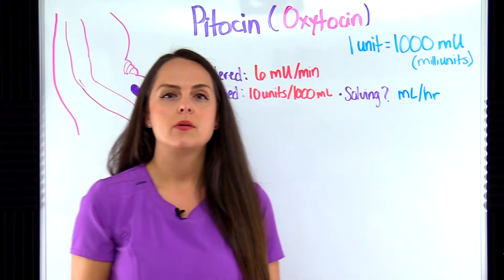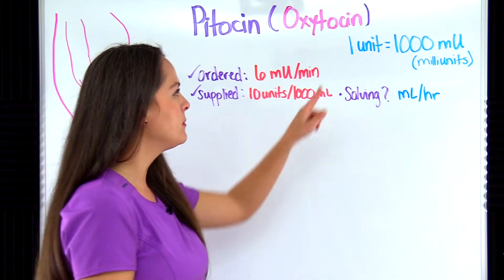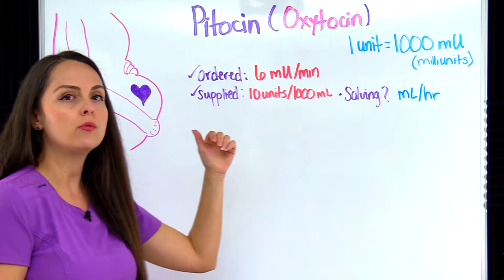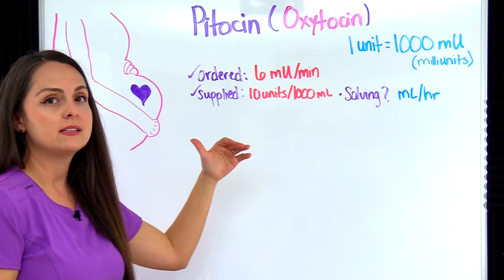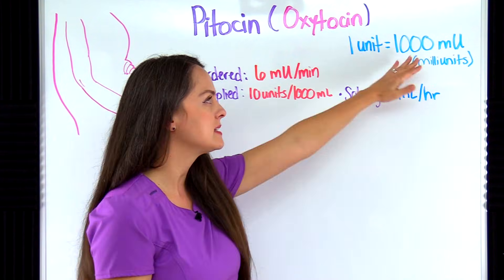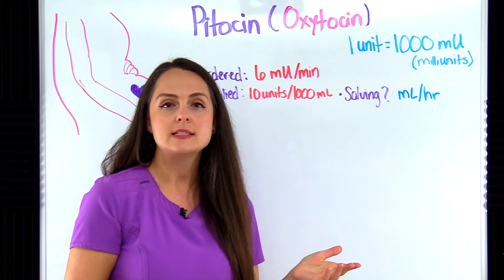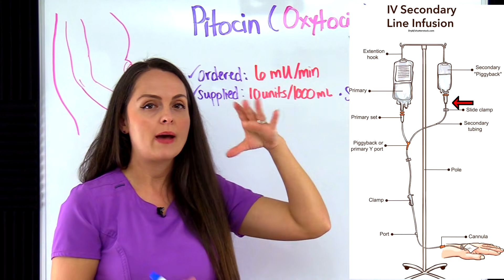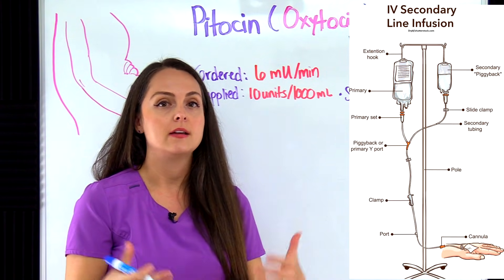When solving Pitocin dosage calculation problems, there's a certain metric conversion you want to remember: one unit equals a thousand milliunits, because Pitocin is going to be ordered in milliunits per minute and you're going to be supplied with a bag that's in units. You want to be able to go from milliunits to units and vice versa. Also remember that Pitocin is given IV piggyback — your fluid of Pitocin will be piggybacked into a primary bag of fluid and infused via an infusion pump.